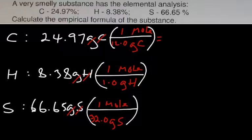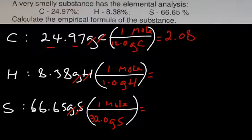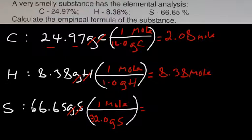So we'll put our equal sign right here for each of these and you'll calculate these. So 24.97 divided by 12.0 — from my calculations to two decimal places I get 2.08 moles for carbon. When you do these calculations, you want to put your answers at two or three decimal places. For hydrogen, it's going to be approximately 8.38 moles. And for sulfur, it's going to be 2.08.